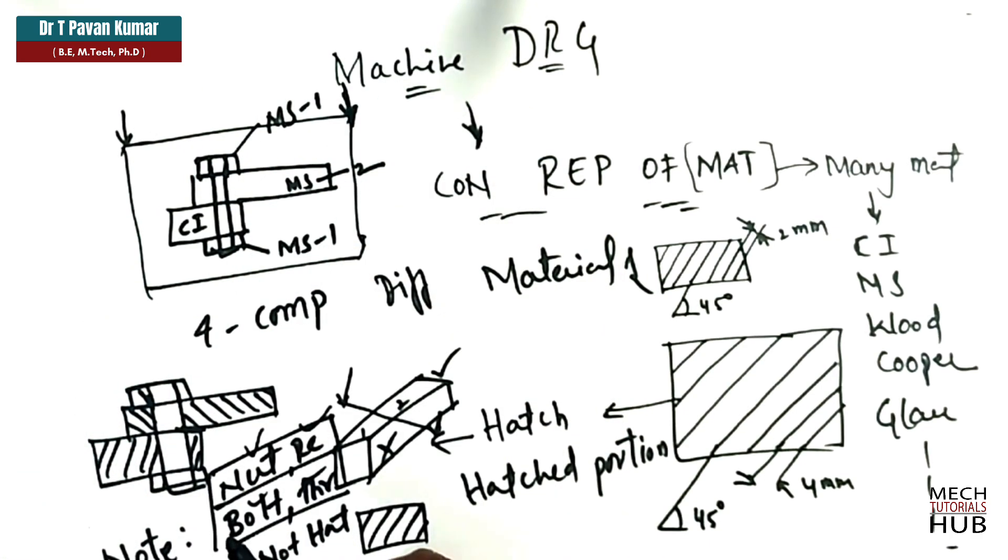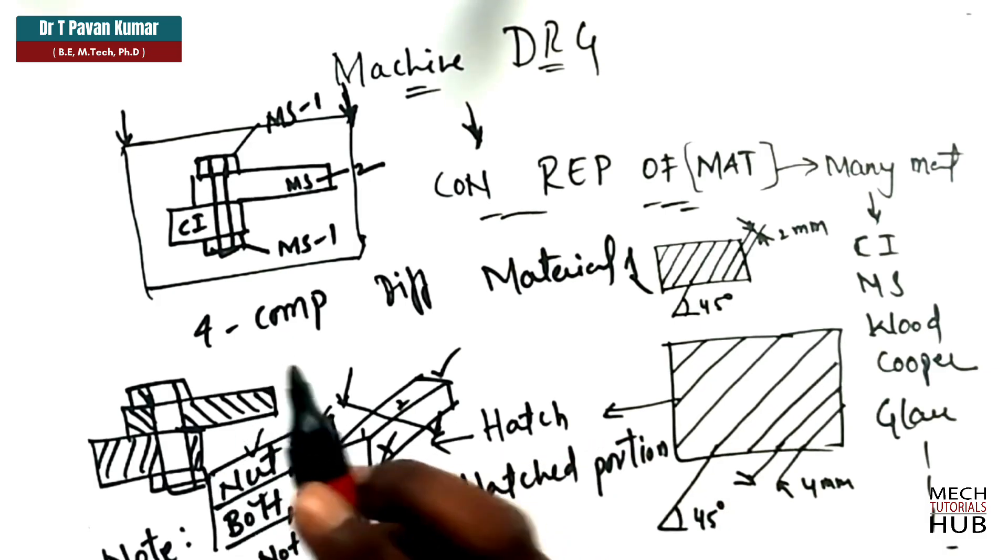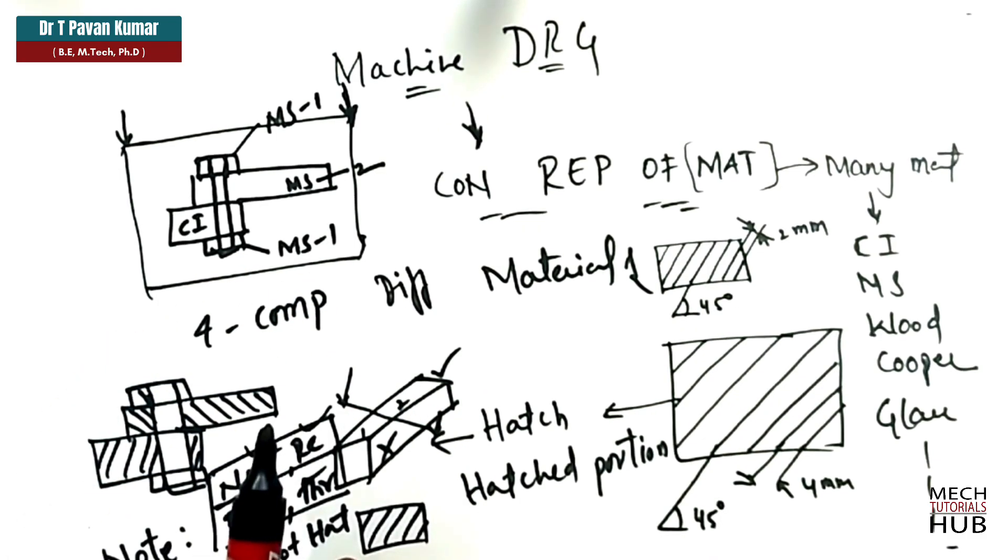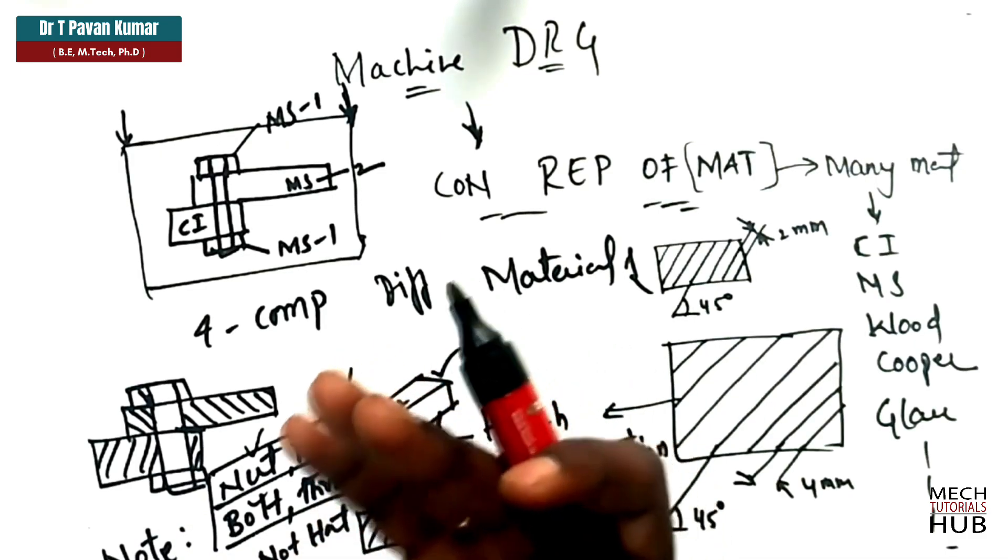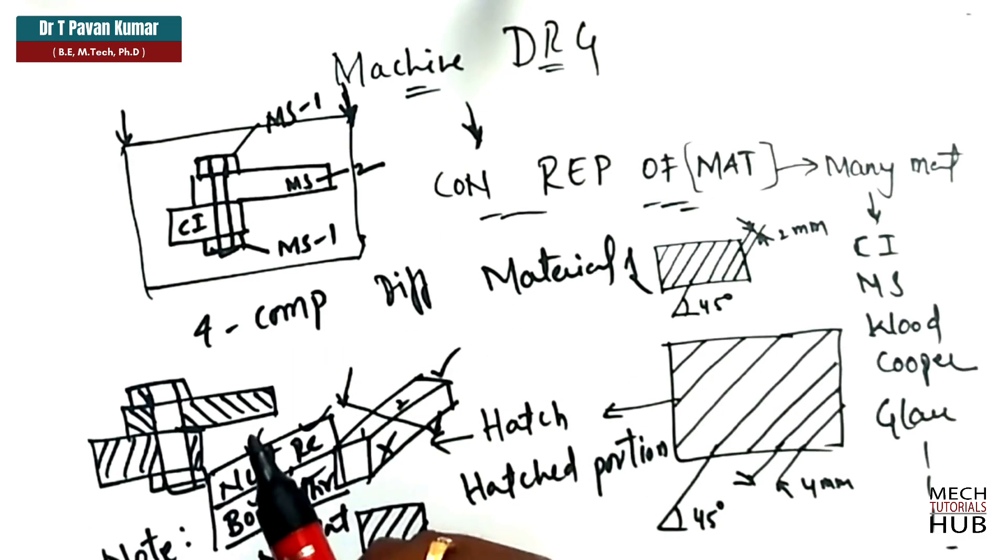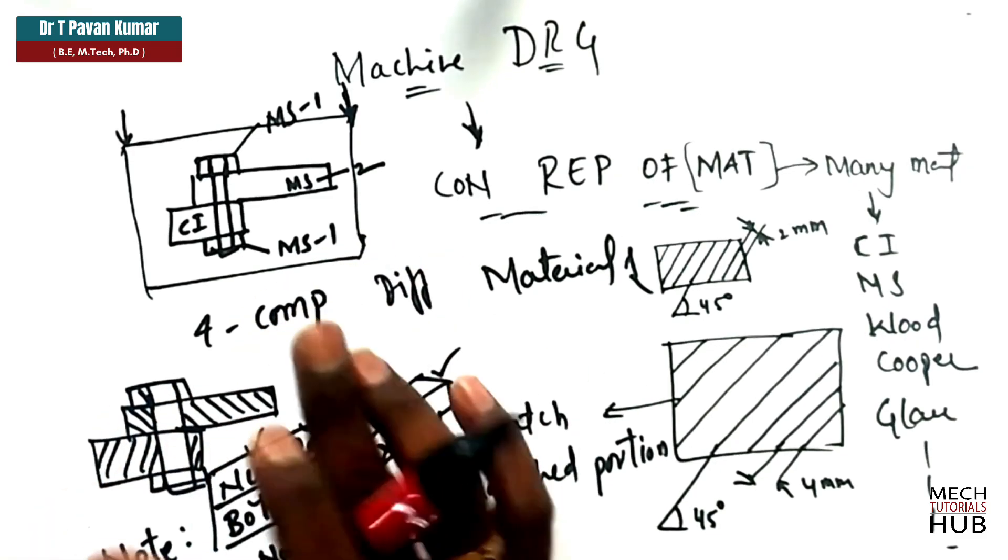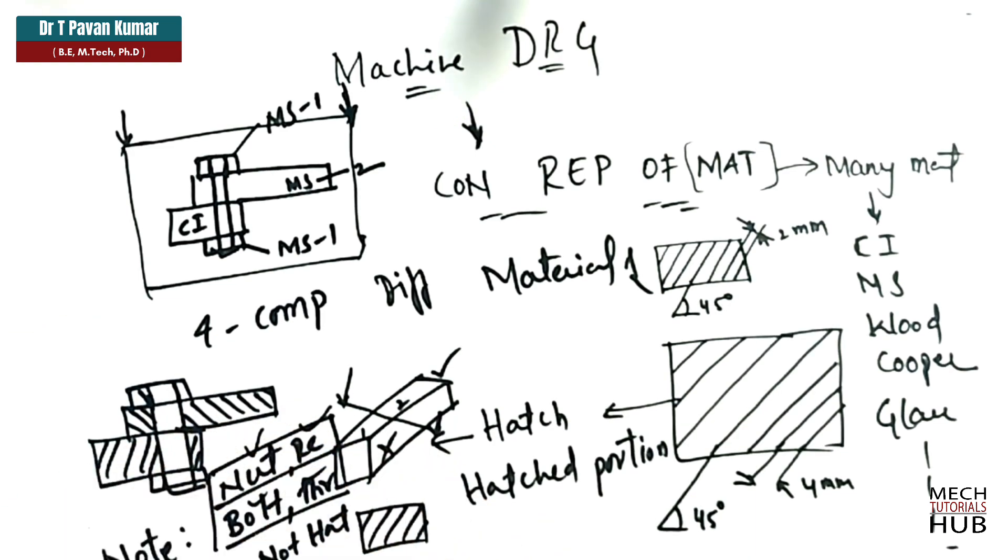If they cut, if we cut the component also, we are not supposed to hatch these type of components. Now, why we do hatching or why we do sectioning? Hatching is okay. To differentiate the material or else to differentiate the component, we will try to do the hatching. That is okay. But why we do sectioning? Why sectioning is required? When you deal with an assembly, you come across many components. You come across the component which are intricate, which are inside the component,